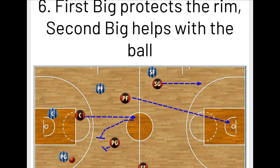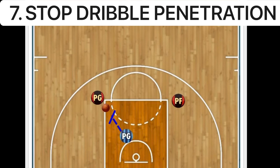Number seven: stop penetration. You need to be a skilled on-ball defender — that is a really good skill to acquire as you're getting better at basketball. Here the point guard is defending and shading the ball handler away from his teammate, funneling him to the corner. Layups are the most efficient shots in this sport, so the first thing your team needs to do to have good transition defense is stop penetration and force passes and shots.